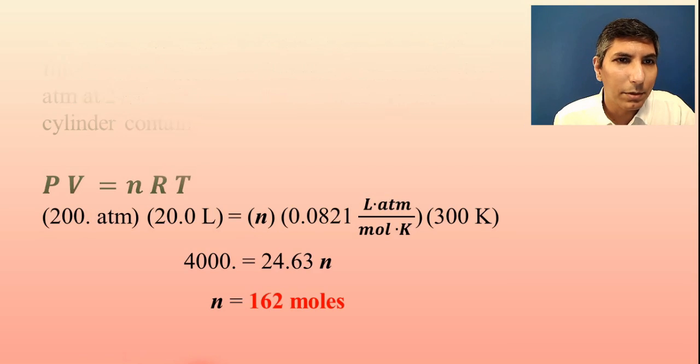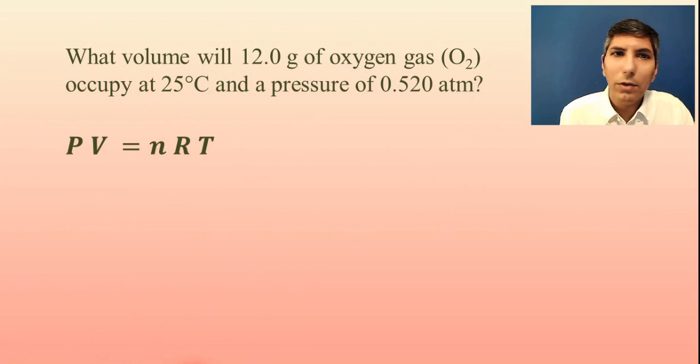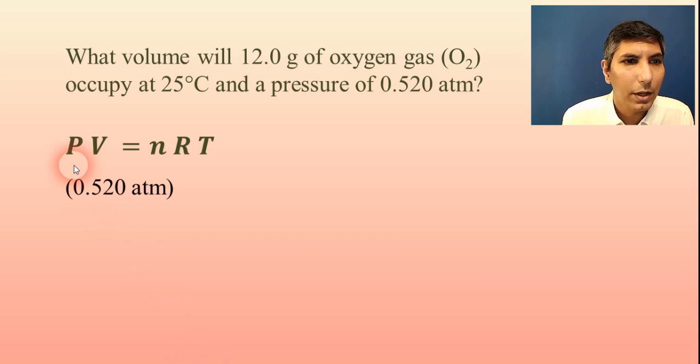Now let's try another problem. This one says, what volume will 12.0 grams of oxygen gas, O2, occupy at 25 degrees Celsius and a pressure of 0.520 atmospheres? So once again, we're going to have to plug into PV equals NRT. So P is for pressure, and it says the pressure is 0.520 atmospheres. I'm going to plug that in there for P. V is for volume. Now we're solving for that, because it says what volume? So that's our unknown.